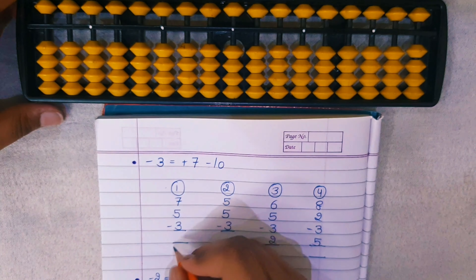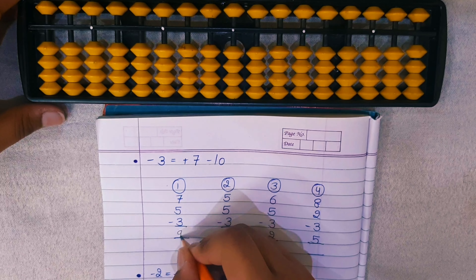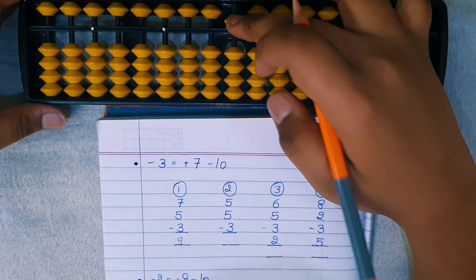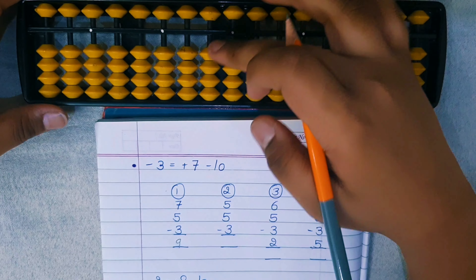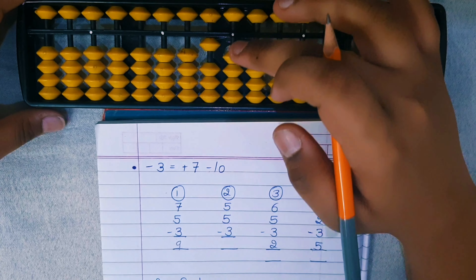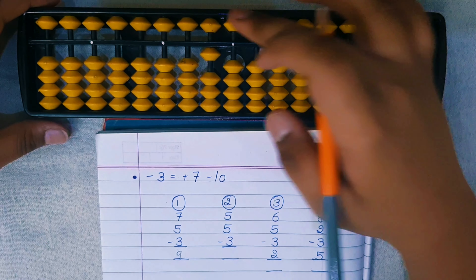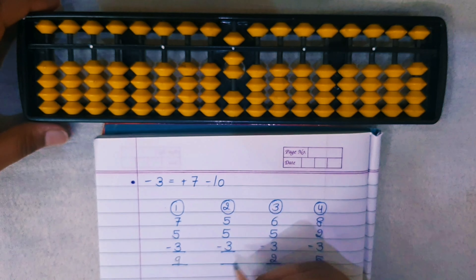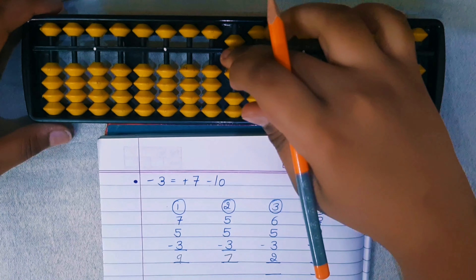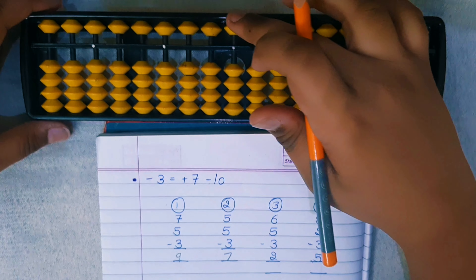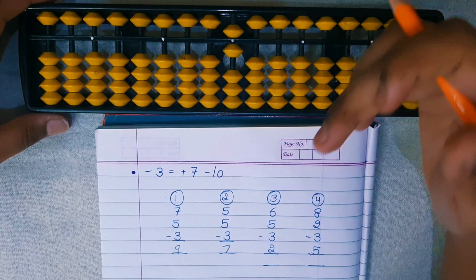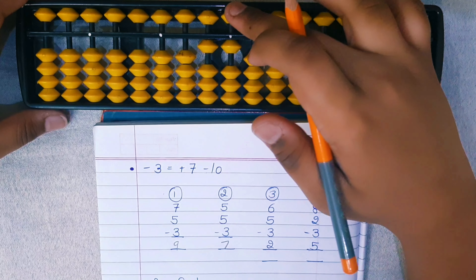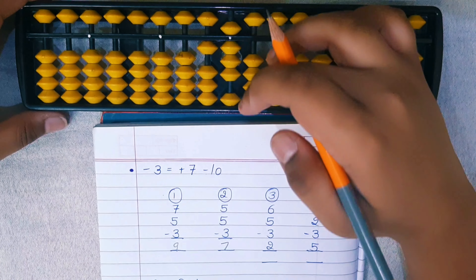Second sum: 5 plus 5 — formula: minus 5 plus 10 — and then minus 3: plus 7 minus 10. Answer is 7. Third question: 6 plus 5 — minus 5 plus 10 — and then minus 3: plus 7 minus 10.